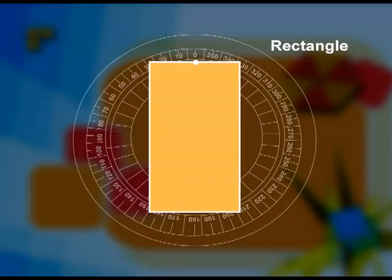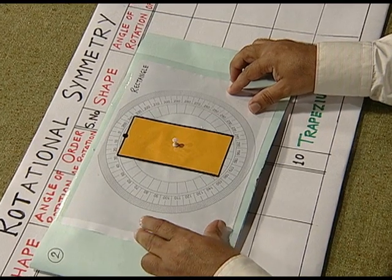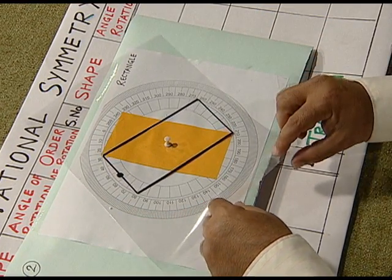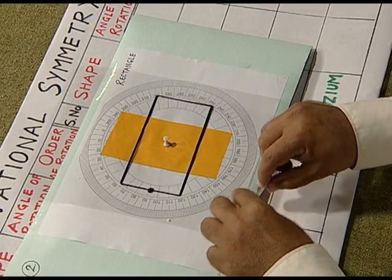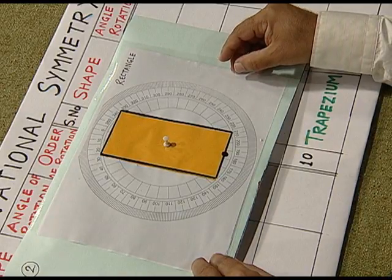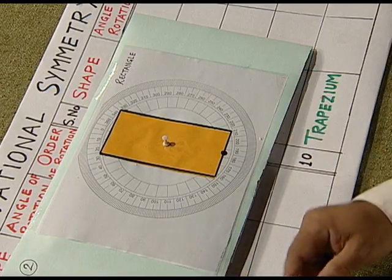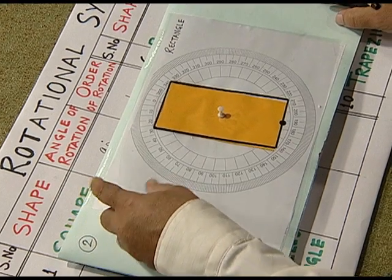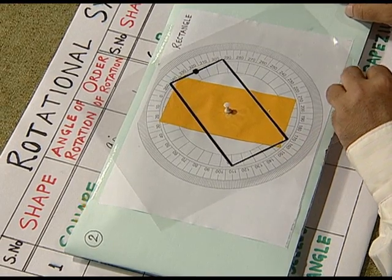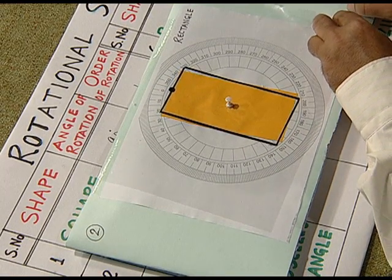Next, we take the example of a rectangle. We observe that as we rotate the rectangle in the anticlockwise direction, the outline coincides with itself after a rotation of 180 degrees. Therefore, the angle of rotation in case of a rectangle is 180 degrees. On further rotation, the rectangle coincides with itself again after a complete turn of 360 degrees.